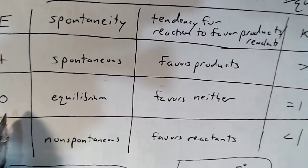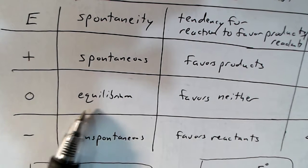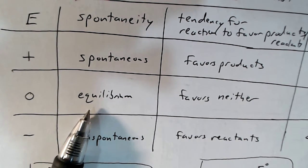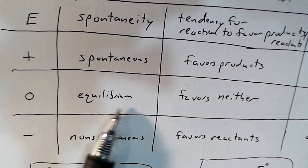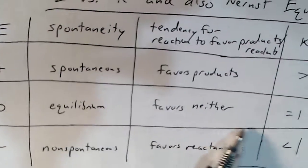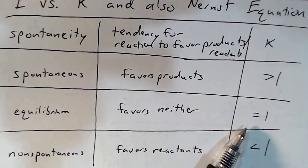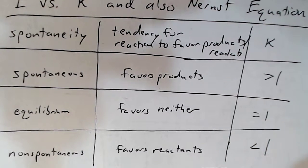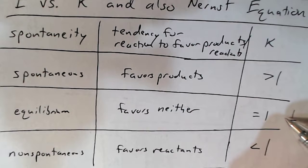If the E value is equal to 0, then it's not really spontaneous or non-spontaneous — it's kind of at equilibrium. It doesn't really favor products or reactants. There might be just as much product as reactant, so the K value might be equal to 1, just as much product as reactant, giving you a value of 1 for K.